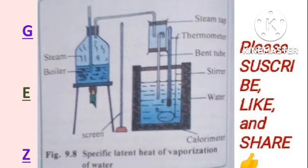In this apparatus, you weigh the calorimeter empty and then half full with water. The temperature of the water is read and recorded. The calorimeter is lagged to insulate it from the heat of the surroundings, and the steam from the boiler is passed through a steam trap to remove any condensed moisture. Only dry steam passes through into the water in the calorimeter.